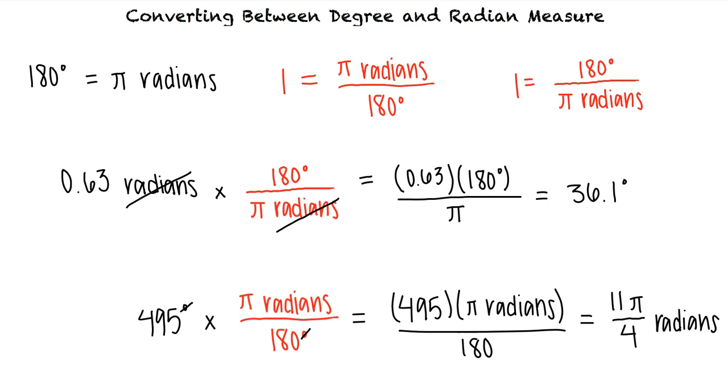Okay, so to convert an angle measurement from radians to degrees, we multiply by 180 degrees divided by pi radians. To convert an angle measurement from degrees to radians, we multiply by pi radians divided by 180 degrees. And we typically leave our answer in terms of pi. That's exactly right. Great work!